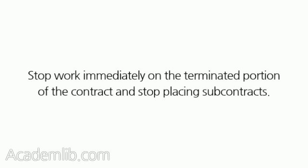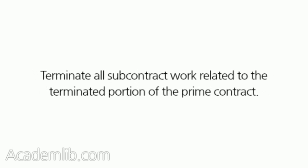Stop work immediately on the terminated portion of the contract and stop placing subcontracts. Terminate all subcontract work related to the terminated portion of the prime contract. Immediately advise the government of any special circumstances preventing work stoppage.